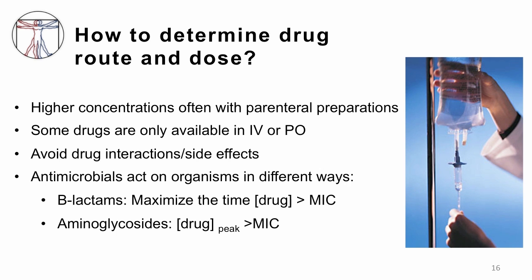How do you determine drug dose and route? You can get higher concentrations when you use intravenous or parenteral preparation, since you don't have to worry about losing some percentage of the drug going through the gut. Some drugs are only available orally or intravenously. You want to avoid interactions and side effects — if your antibiotic changes the level of another drug the patient is on, that would be an issue. Remember that antimicrobials act on organisms in different ways. Beta-lactam antibiotics like penicillin require maximizing the amount of time the drug concentration is above the MIC, compared to aminoglycosides where you want to achieve the highest peak concentration above the MIC.